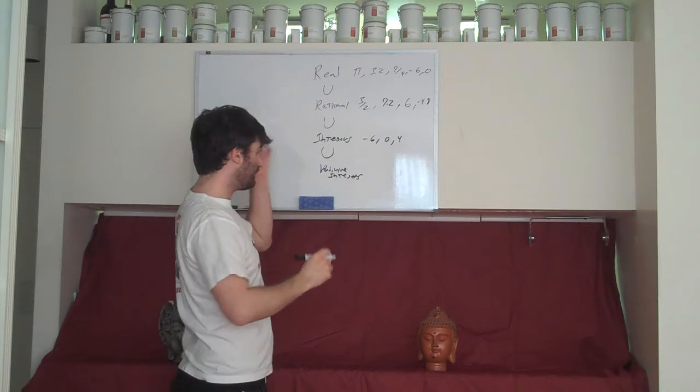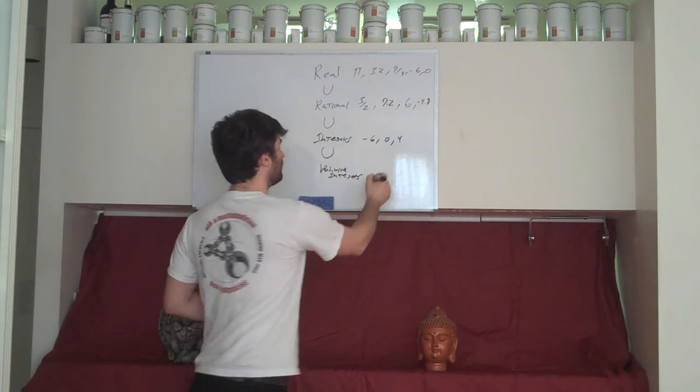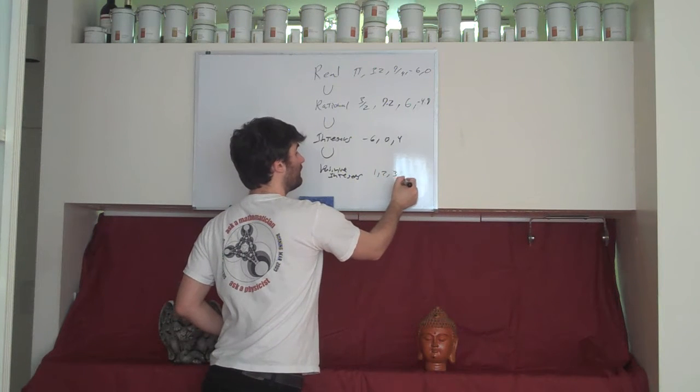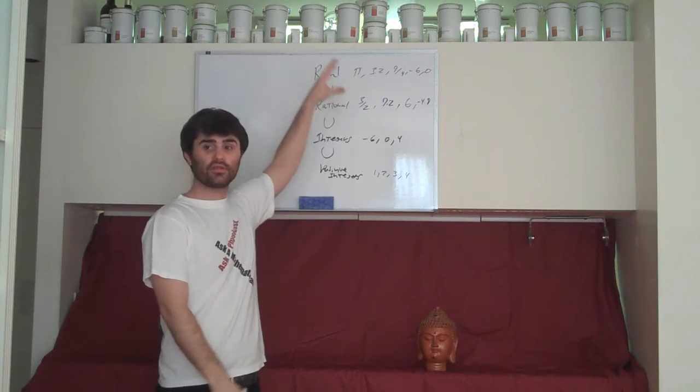These are a subset of the integers, because these are just the whole numbers that are excluding the negative ones and excluding zero. So we have one, two, three, and so forth. And we see that positive integers are a subset of the integers, which are a subset of the rationals, which are a subset of the reals.